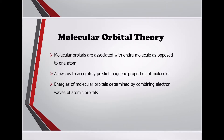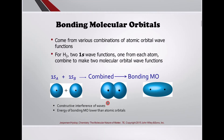Molecular Orbital Theory: molecular orbitals are associated with entire molecules as opposed to one atom. This allows us to accurately predict magnetic properties of molecules. Energies of molecular orbitals are determined by combining electron waves of atomic orbitals.